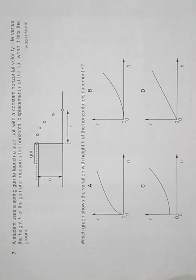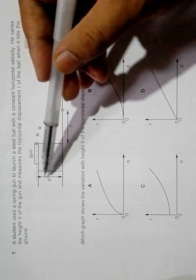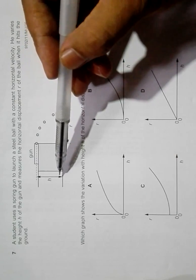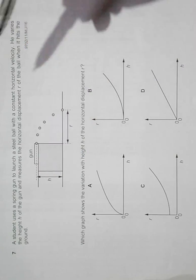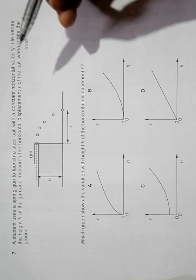One thing to remember is that h is the height of projection, or the height through which the object is projected or fired, and r is the horizontal range.